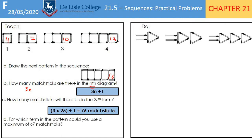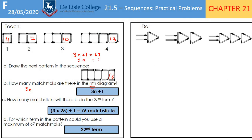For which term could you use a maximum of 67 matchsticks? We write 3n + 1 = 67, subtract 1 from both sides to get 3n = 66, then divide by 3 to get n = 22. So it's the 22nd term where you would use 67 matchsticks. You might want to pause the video and copy this down for reference.